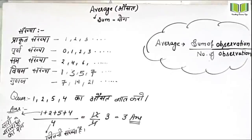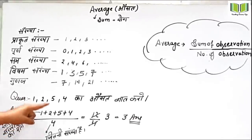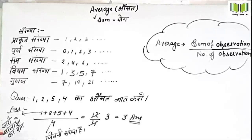Here we have a simple example: 1, 2, 5, 4. What is the sum of all the Sankhya? We divide by how many numbers we have — one, two, three, four. How many numbers are there? Four. The sum is 12 and the count is 4, so the average is 3.